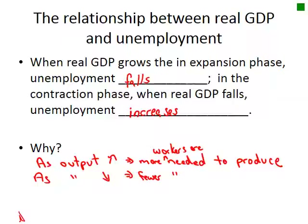Now let's look at the relationship between real GDP and unemployment. When real GDP grows in the expansion phase, unemployment falls. The reason is that if you are producing more stuff, you need more people to produce those goods. In the contraction phase, when real GDP falls and we're making less stuff, unemployment increases.